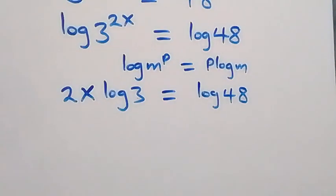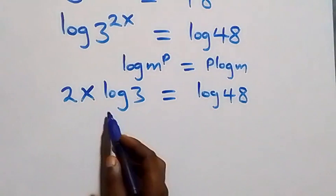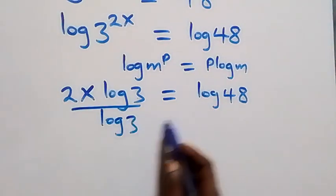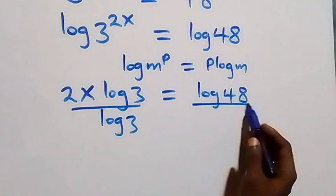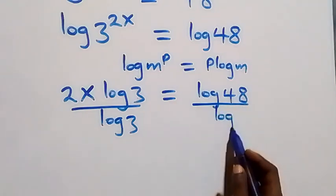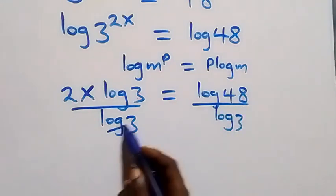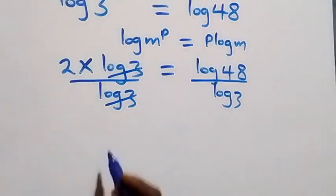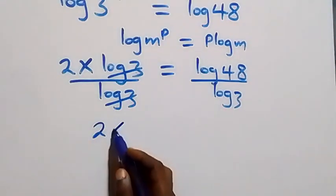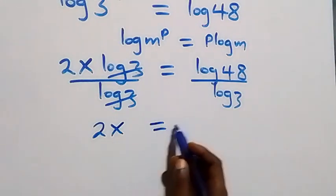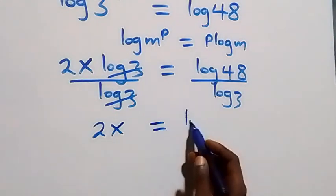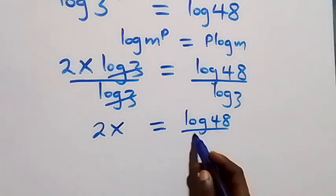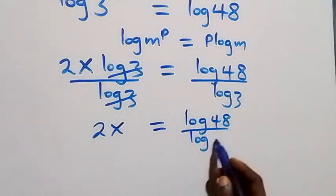The next step: we divide both sides by log three. Log three cancels on the left side, and we are left with two x, which is now equals to log forty-eight over log three.